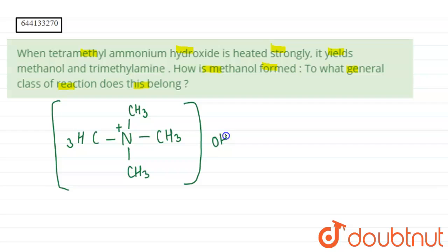So this is tetramethyl ammonium hydroxide. Now when we strongly heat this compound, what happens is that the CH3 bond will break and the electrons are transferred towards nitrogen.